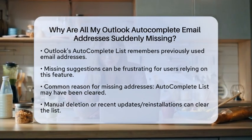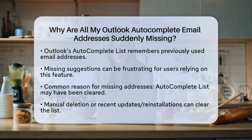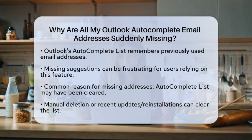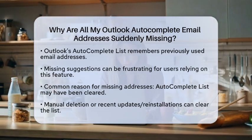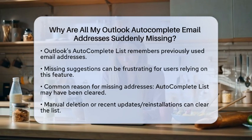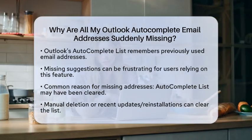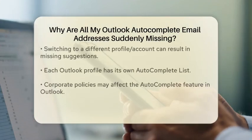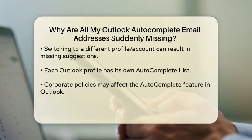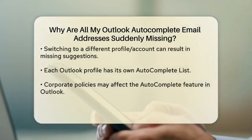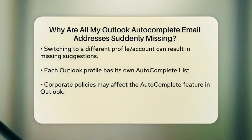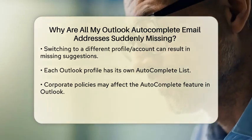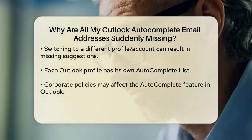It is important to note that Outlook uses a feature called the Autocomplete list to remember the email addresses you have previously used. If this list disappears, it could be due to a few different factors. One common reason is that the Autocomplete list may have been cleared. This can happen if you manually delete entries or if you have recently updated or reinstalled Outlook.